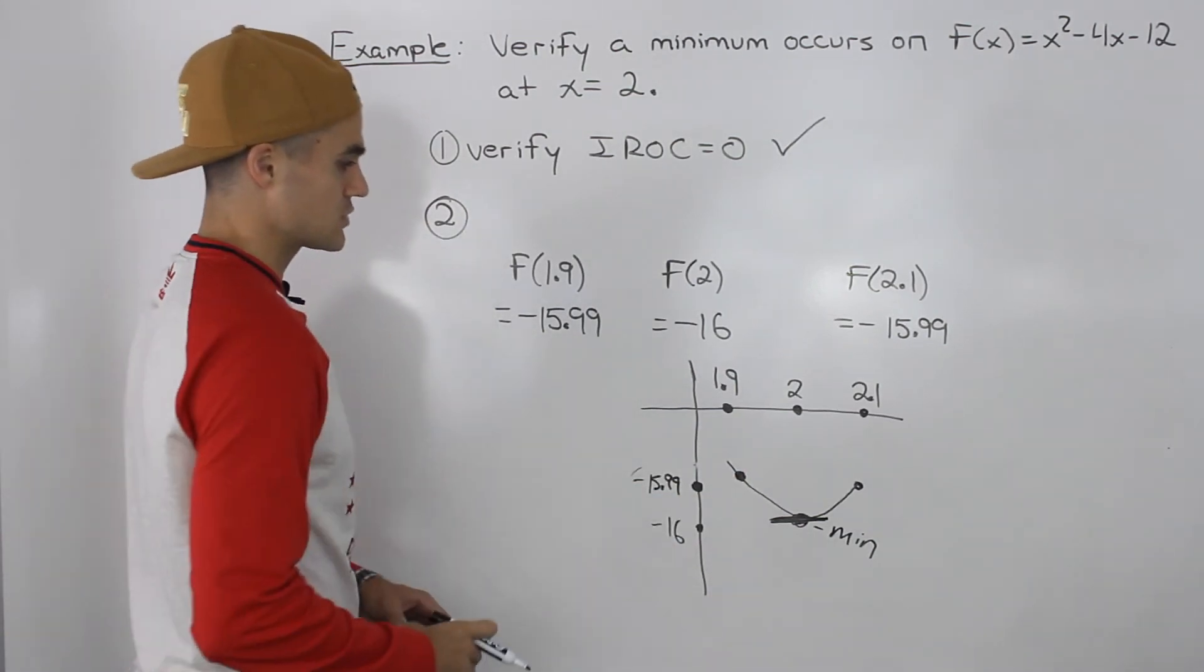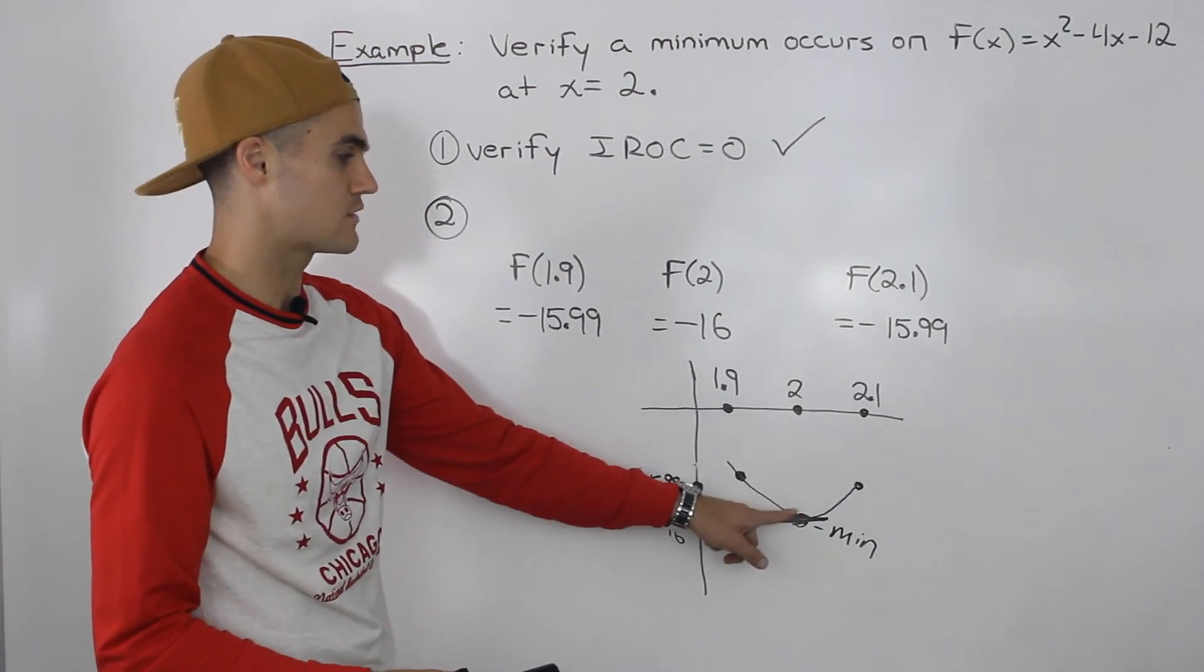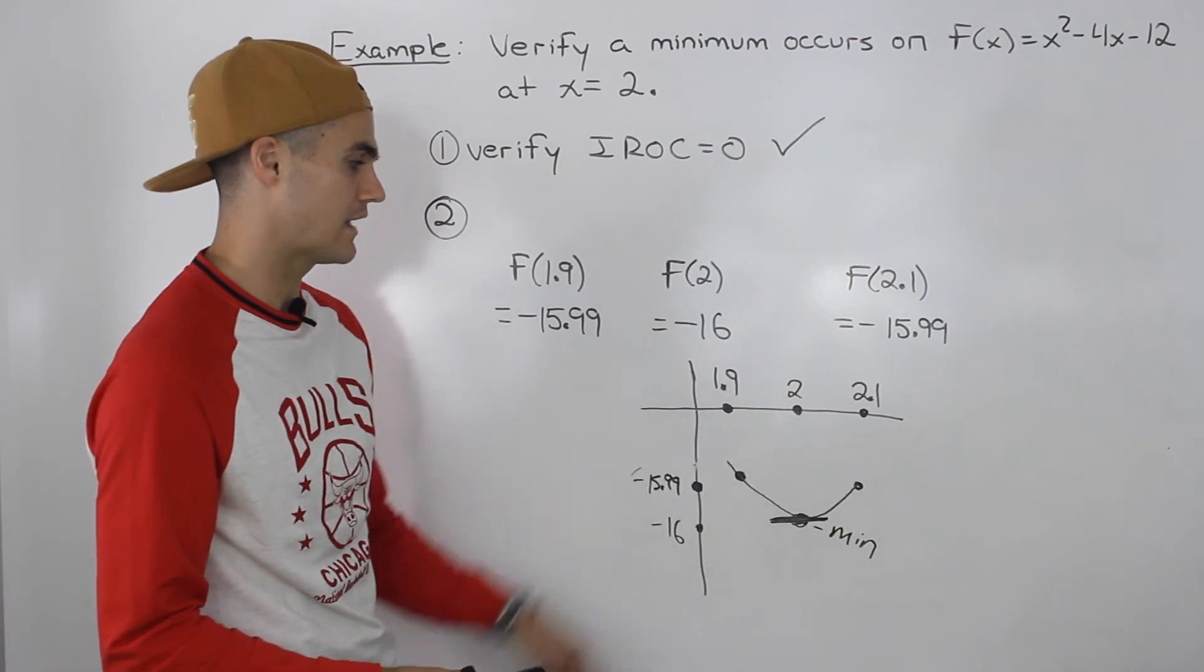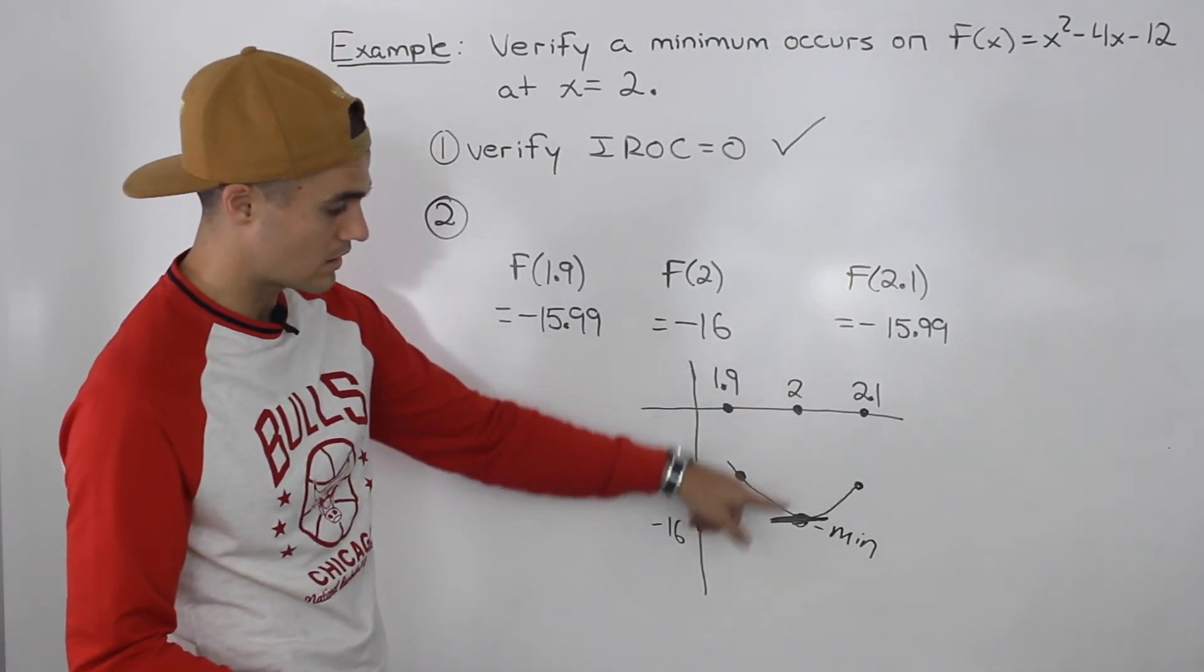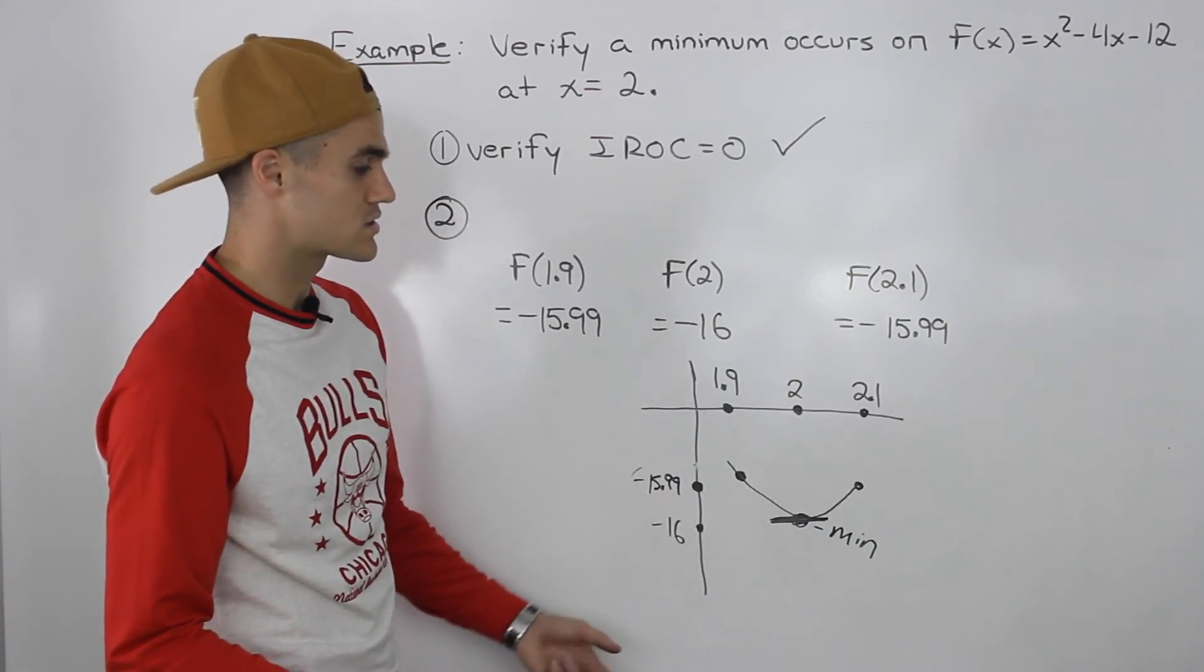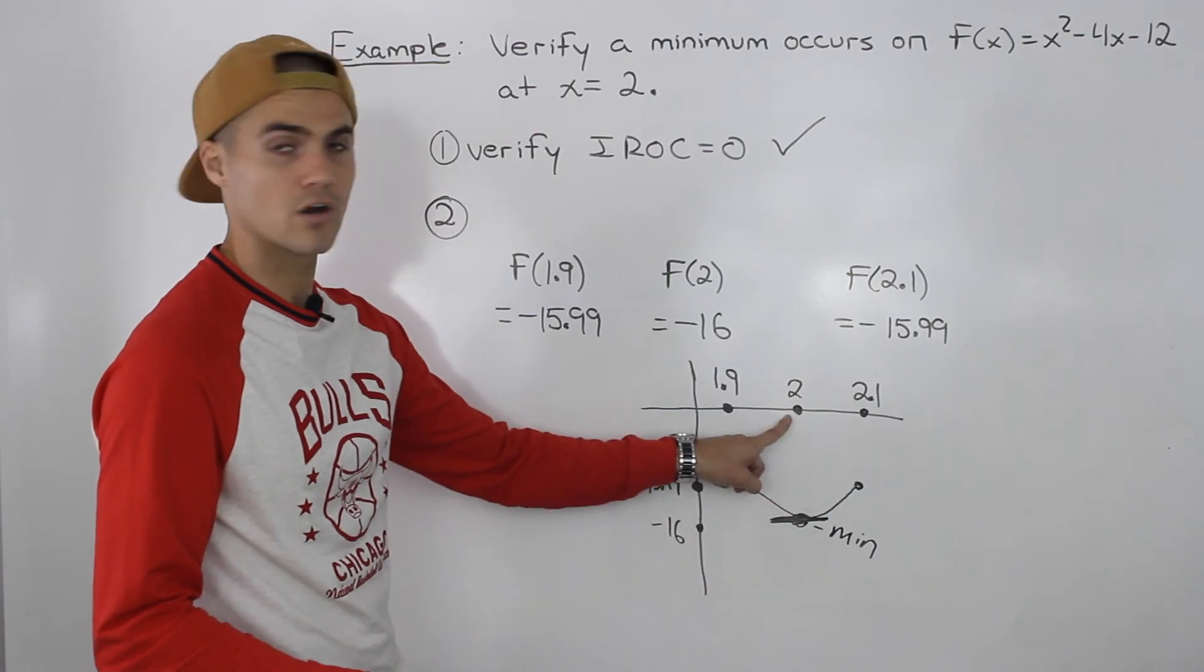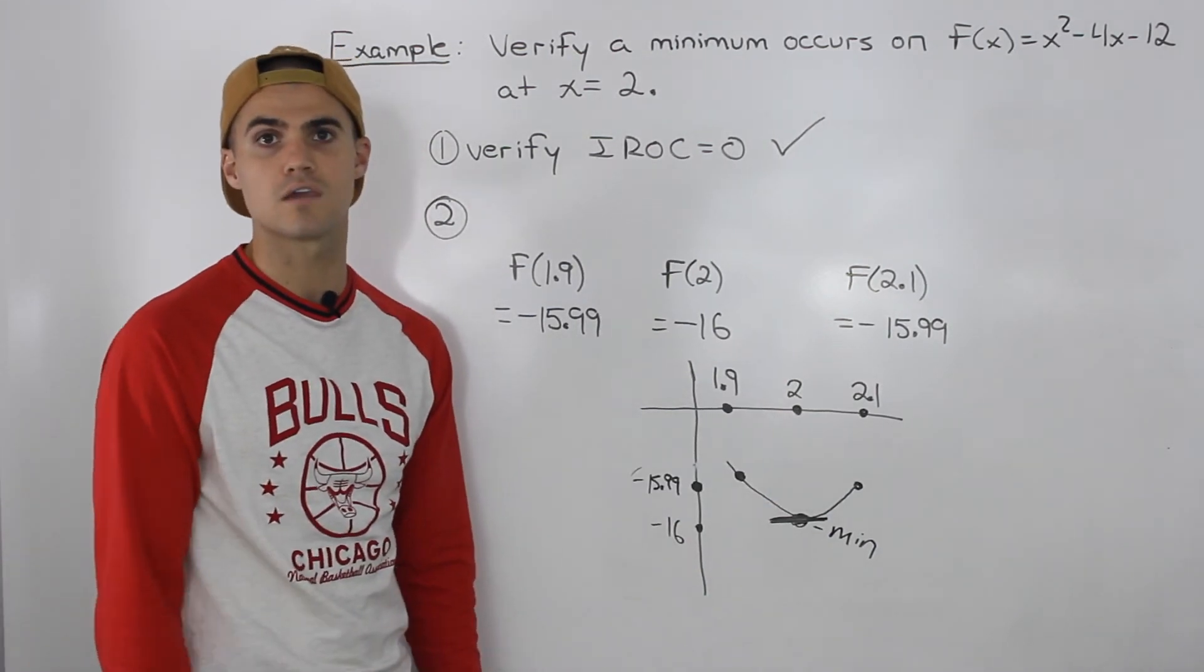And then in step two, we looked at y values for this function that were very close to this x value of 2 to both the right side and the left side. Those y values were greater than that y value of -16 at that x value of 2. So we know that a minimum is occurring at this x value of 2. And that is the end of the question.